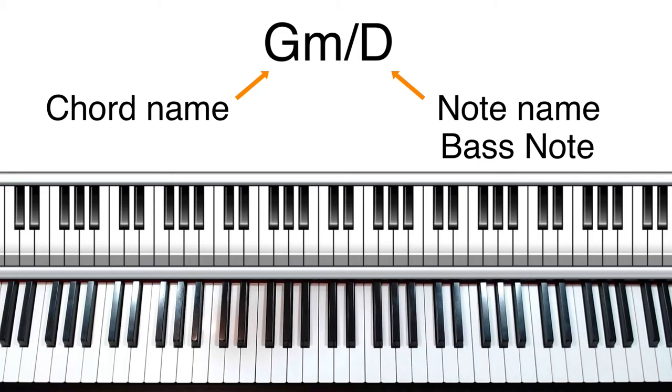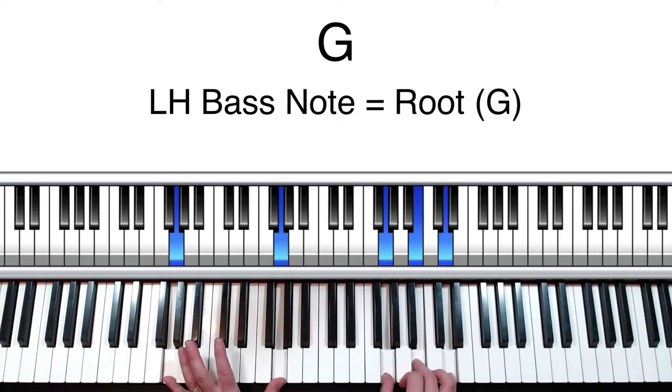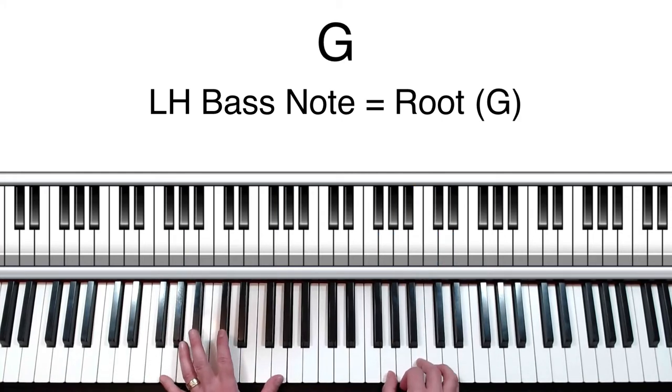So let's take a look. If you're playing a G chord and it just says G, well that's great. Then in your left hand, you'll want to play just the root of the chord, a G, sometimes just an individual G, sometimes two octaves of Gs. And that's a pretty typical way to play - your left hand plays the root of the chord.